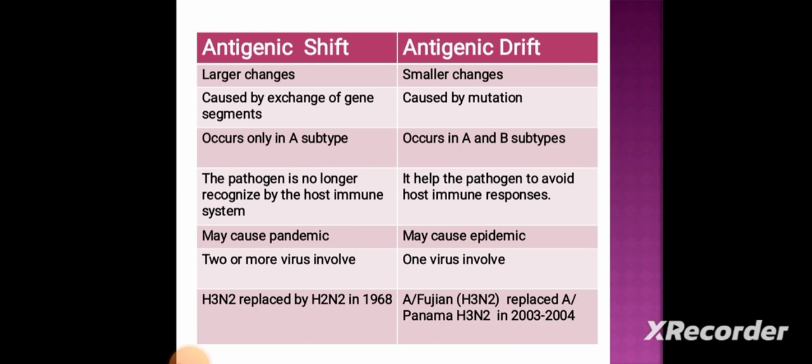In antigenic drift, the changes help the pathogen to avoid the host immune response. Antigenic shift may cause a pandemic, whereas antigenic drift may cause an epidemic. In antigenic shift, two or more viruses are involved, whereas in antigenic drift only one virus is involved. An example of antigenic shift is H3N2 replacing H2N2 in 1968. An example of antigenic drift is A/Fujian H3N2 replacing A/Panama H3N2 in 2003 to 2004.